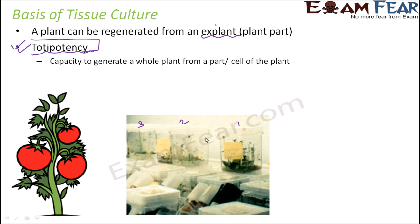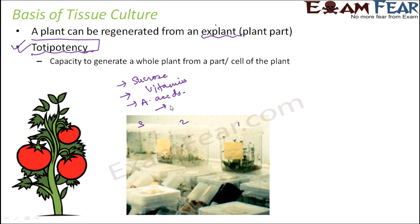What should be there in the nutrient medium? The test tube should basically contain a source of carbon like sucrose, which can act as food for the growing plant, because the growing plant also needs food for carrying out all the growth activities. Vitamins should be present, amino acids — these are the essential things — and most importantly, the growth hormones like auxins and cytokinins. These are the growth hormones which regulate growth in plants, so all these should be present inside the test tube.